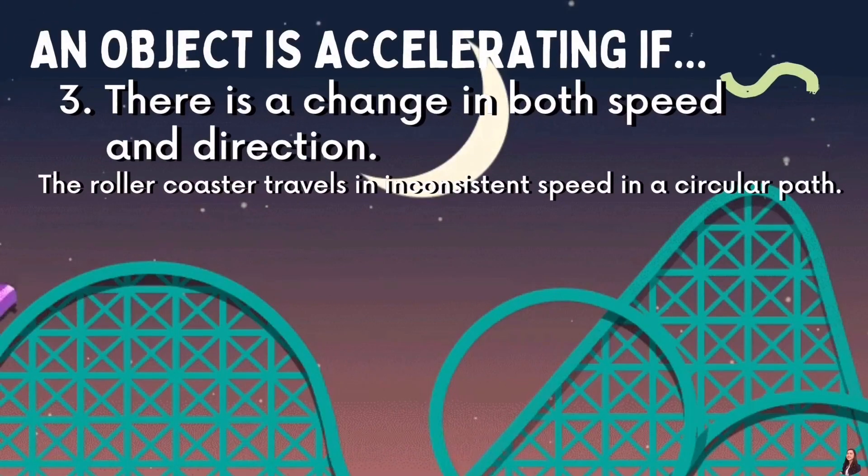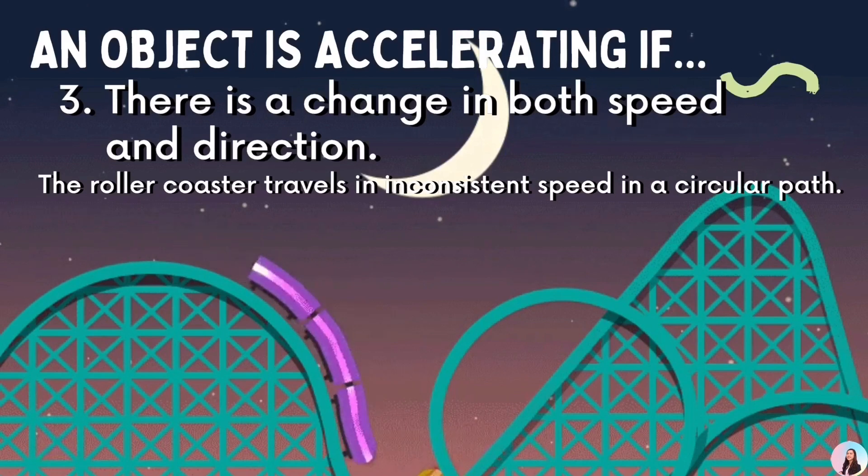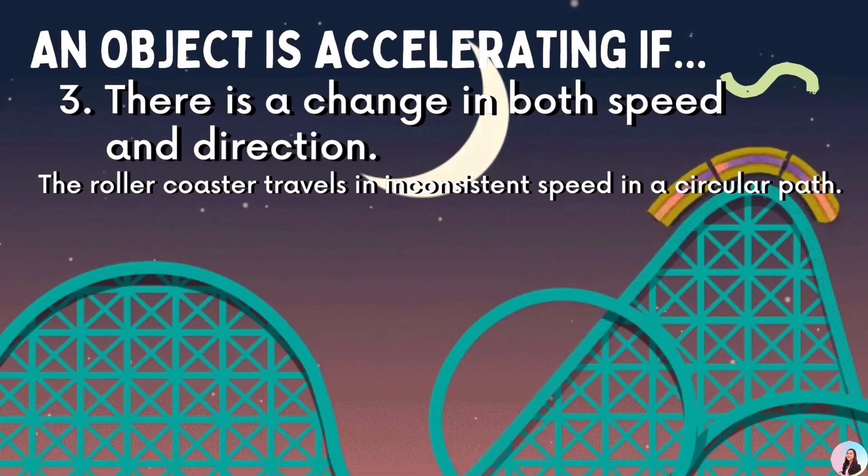Number 3, there is a change in both speed and direction. For example, the roller coaster travels in inconsistent speed in a circular path. Notice that the roller coaster travels in different directions.